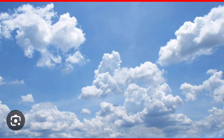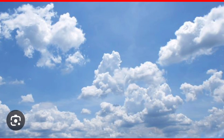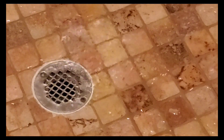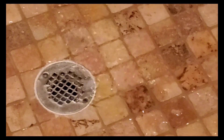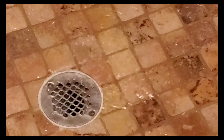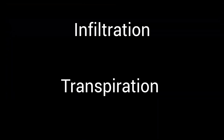Precipitation is rain, snow, sleet, or hail. And when it rains so much that the ground is saturated with water and it rains even more, the water doesn't soak into the ground and it runs off into the nearest lake or river. Infiltration and transportation are all parts of the water cycle as well.